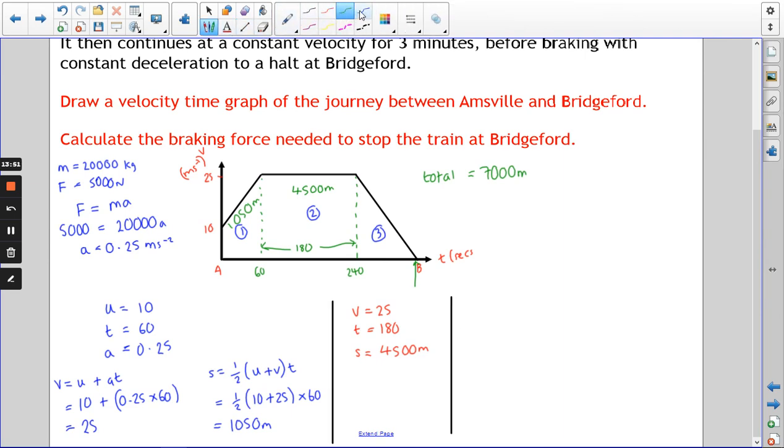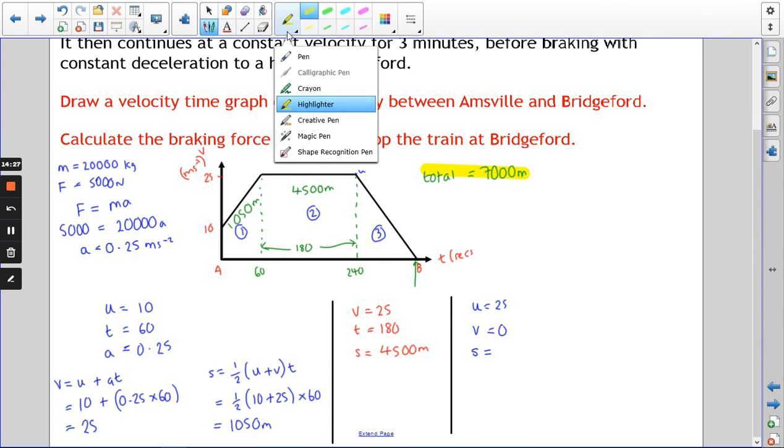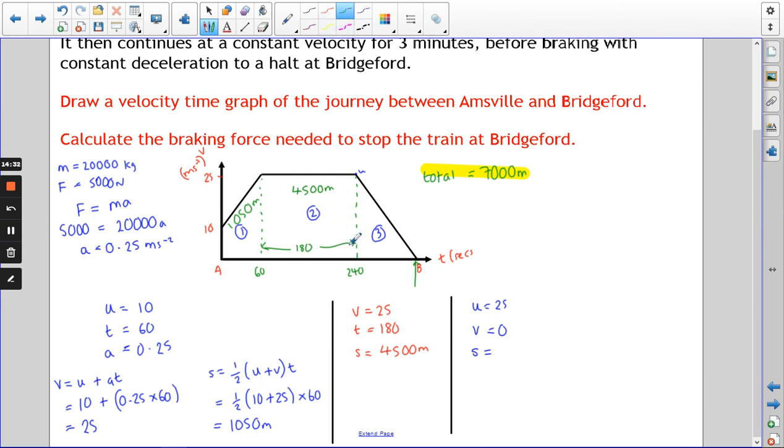Section three. Let's have a look at what we already know. This time u, because it's the initial velocity, is 25. V is zero because the train is going to come to a stop. I don't know t, I don't know a. I do know s. This is where you've got to remember that we know the total distance between the stations is 7000 meters. As you can see from our graph, we've already traveled 5550 meters, so we haven't got far left to go. If you take that away from 7 kilometers, we've got 1450 meters left of track. So 1450 meters goes in there.